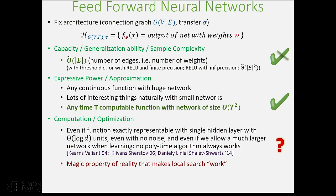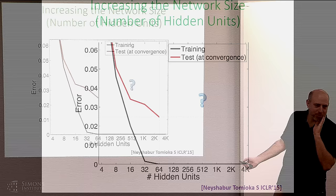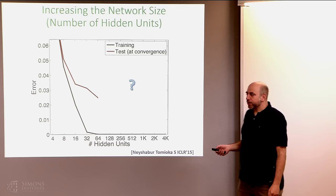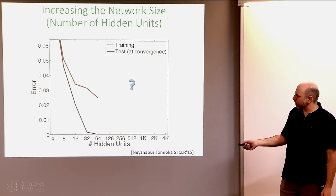What we're going to look at in this talk is try to understand what's going on — not only the computation and optimization aspect, but also a better understanding of where capacity control and generalization come from. The optimization is related not only to why we can optimize, but also to capacity control. To convince you of that, here's an experiment: we took CIFAR-10 or MNIST data and trained a simple network with a single hidden layer of increasing size. Each point corresponds to completely separate training on increasingly large networks.